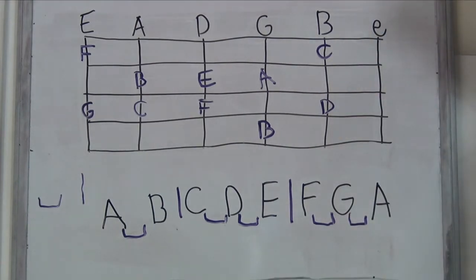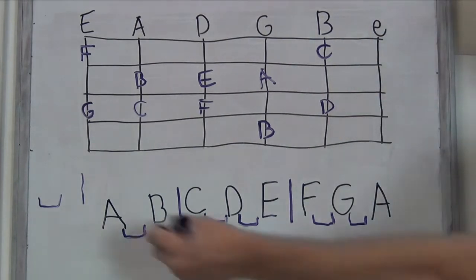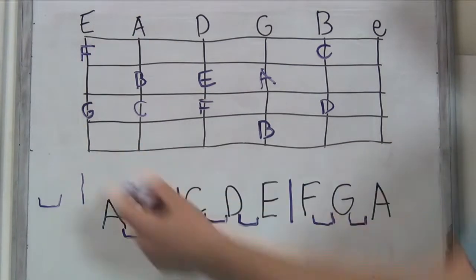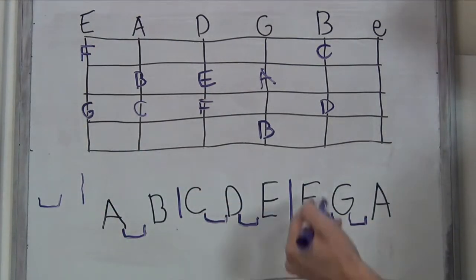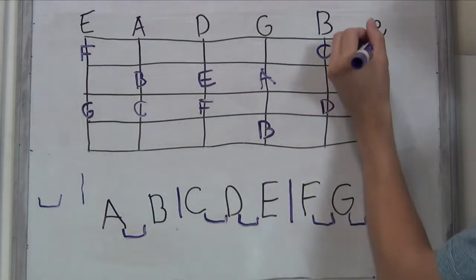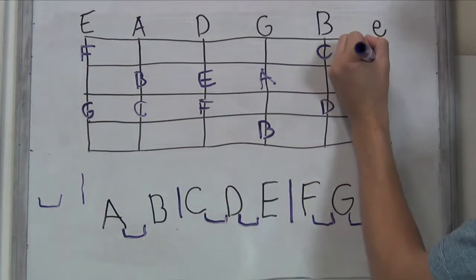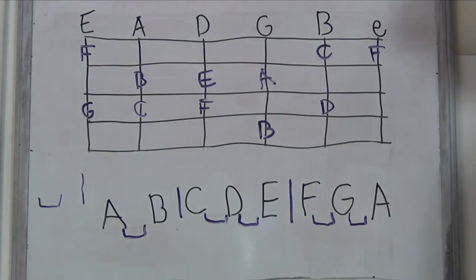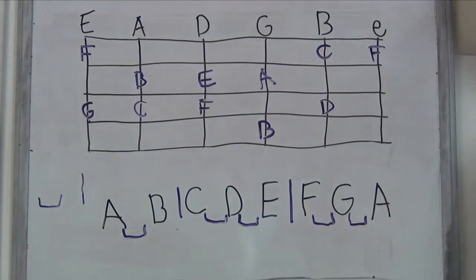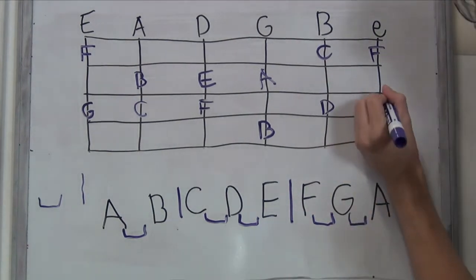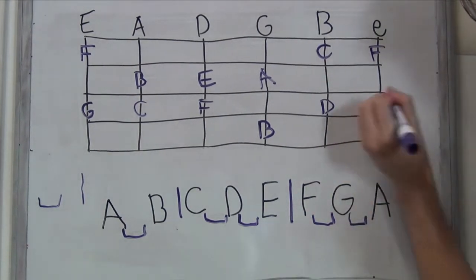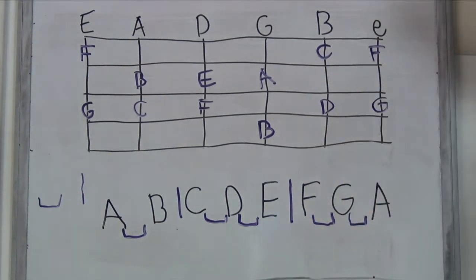So let's go from there. Our open E string — we've actually seen that before, down low. So this is just going to be the same thing. E to F, half step. F to G, whole step. And these are your natural notes across the guitar.